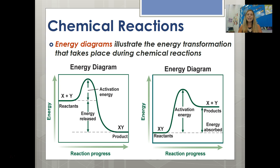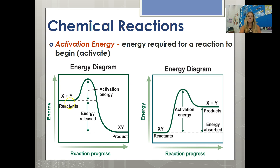We can use what's called an energy diagram to illustrate the energy transformation that takes place during a chemical reaction. Energy diagrams have very specific parts. The reactants are here — what you start with — and the products are here. You can see the energy of the reactants is way up high and the energy of the products is way down low. There's also a little blip of energy called the activation energy — it can be small or big depending on the reaction.